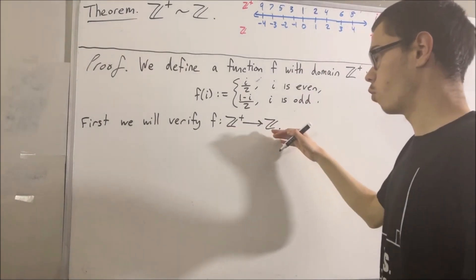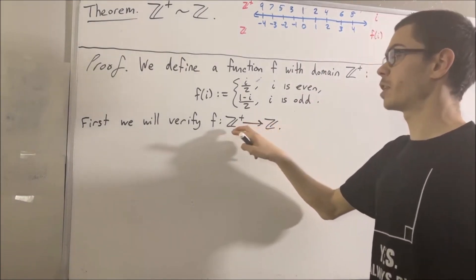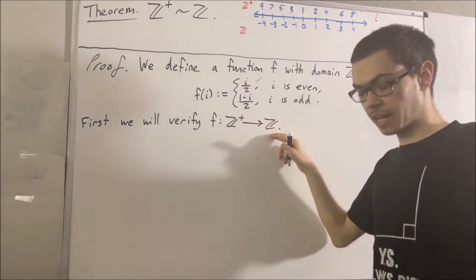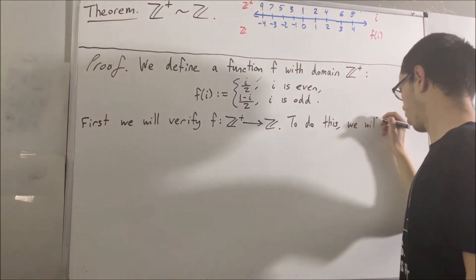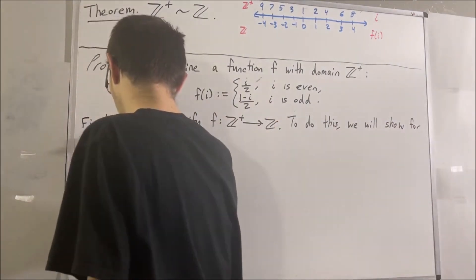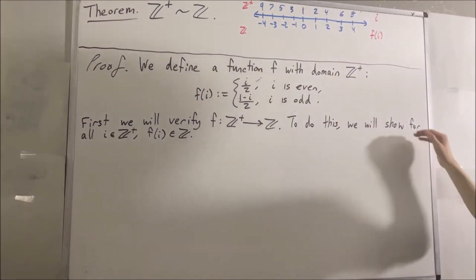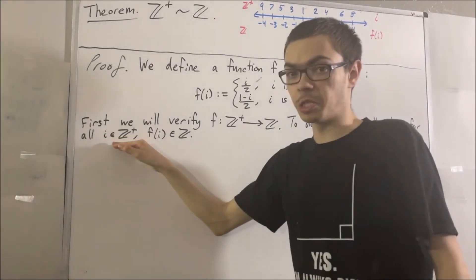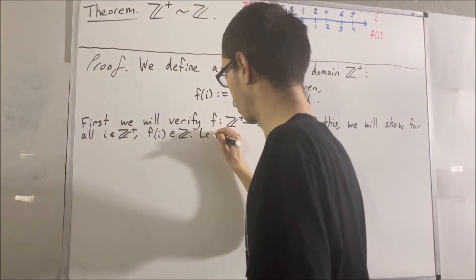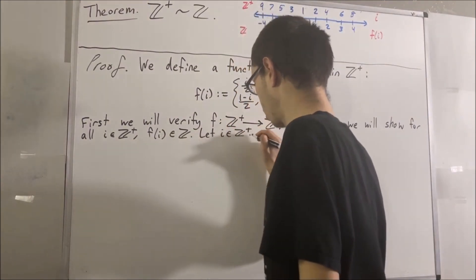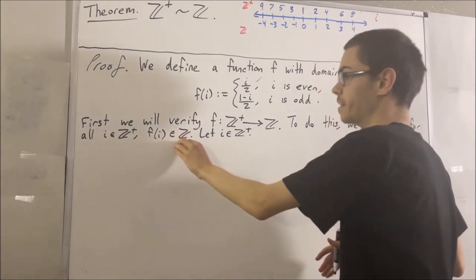To verify this, we're going to show that for every positive integer i, f of i is an element of the integers. We're trying to prove a statement about every positive integer, so give me an arbitrary positive integer — I'll call it i. Our whole goal from here is to deduce that f of i is an integer.